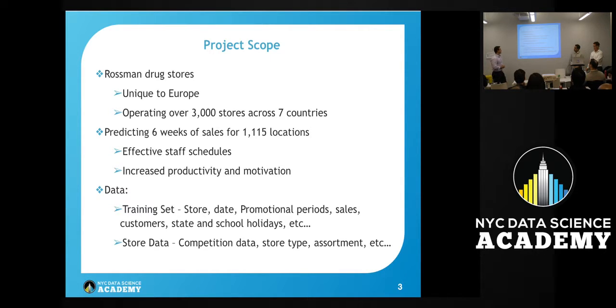The data itself is broken into training and test sets. The training set is about two and a half, three years worth of store sales. It includes dates, promotional periods, sales, customers, state and school holidays, and other features. The store data describes each store on a unique ID basis with competition information, store type and assortment—categorical data with no exact descriptions.